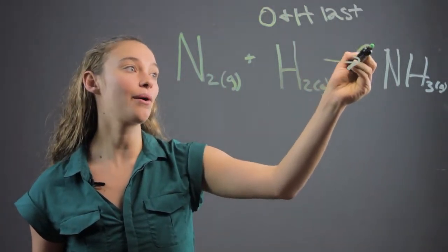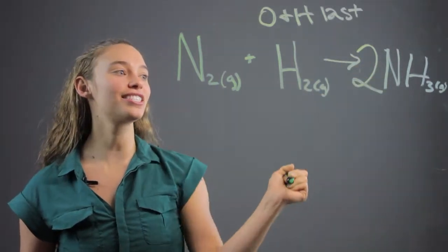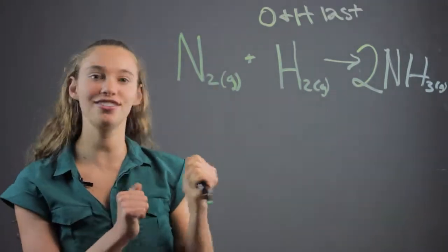We're going to have to add the coefficient two in front of the N to get two nitrogen on this side. So now we have two nitrogen here and two nitrogen here. So great, our nitrogen is balanced.